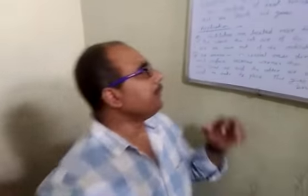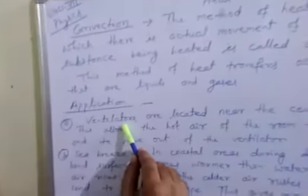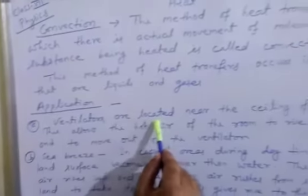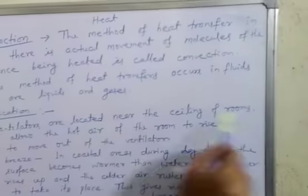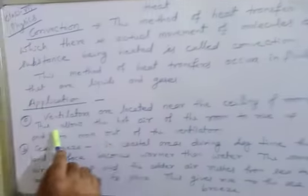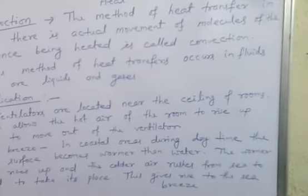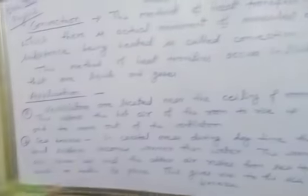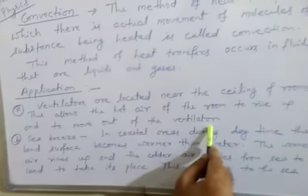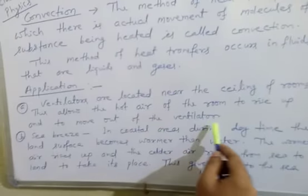Ventilators are located near the ceiling of rooms. This allows the hot air of the room to rise up and to move out of the ventilator. And fresh air comes through the window.